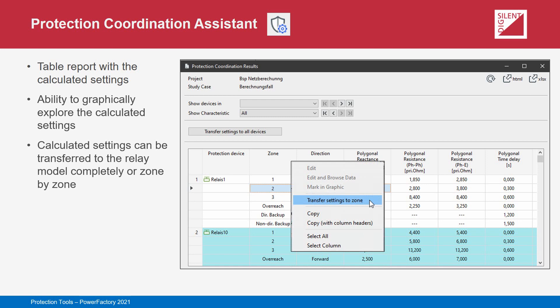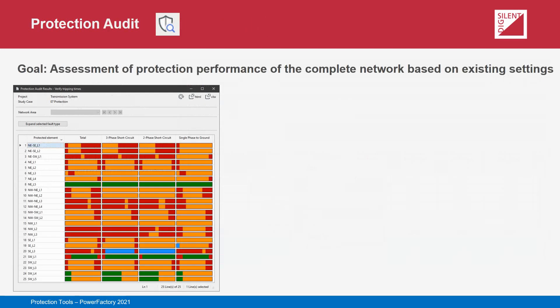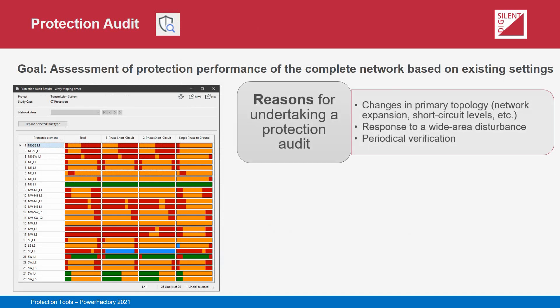With the settings transferred to the relays, calculations and simulations can then be performed on the network model and the performance of the new settings can be analyzed in detail. The Protection Audit tool is used to evaluate the performance of an existing protection scheme where the settings of the relays are already known. The tool will identify weaknesses in the scheme and classify the issues in a concise colour-coordinated report according to severity. Possible reasons for undertaking a protection audit include capturing the impact of changes to the primary topology of the network caused by its evolution over time, and seeing the response of the protection scheme to wide area disturbances.